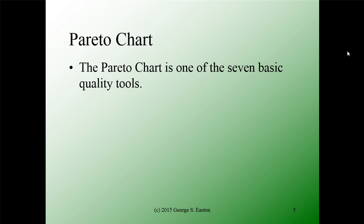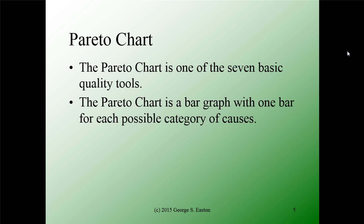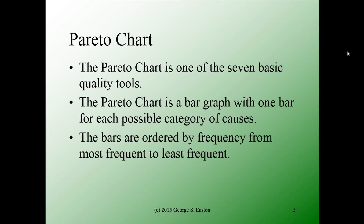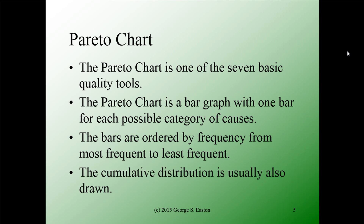I'll talk specifically about the seven basic quality tools in a separate video. The Pareto Chart is a bar graph with one bar for each possible category of causes. These bars are ordered by frequency from most frequent to least frequent, so the most important cause goes first. In addition, the cumulative distribution is usually also drawn on this chart.